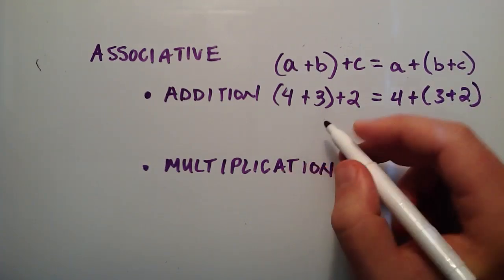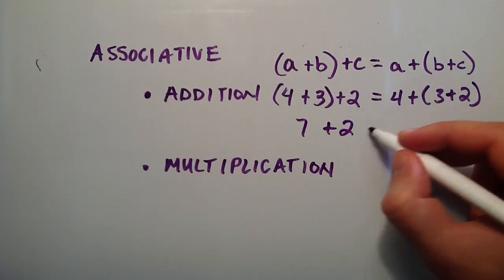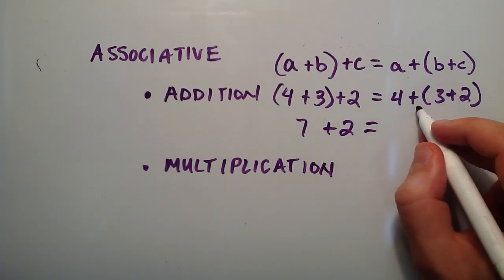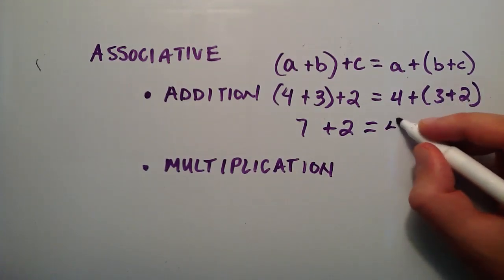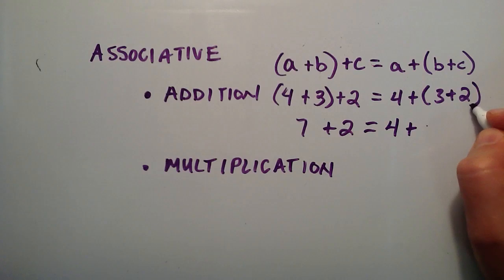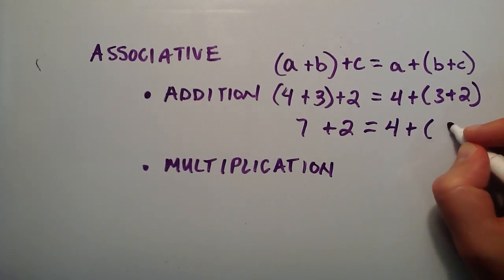4 plus 3 is 7, so we have 7 plus 2, and that should equal 4 plus 3 plus 2, adding the part in the parentheses first. 3 plus 2 is 5.